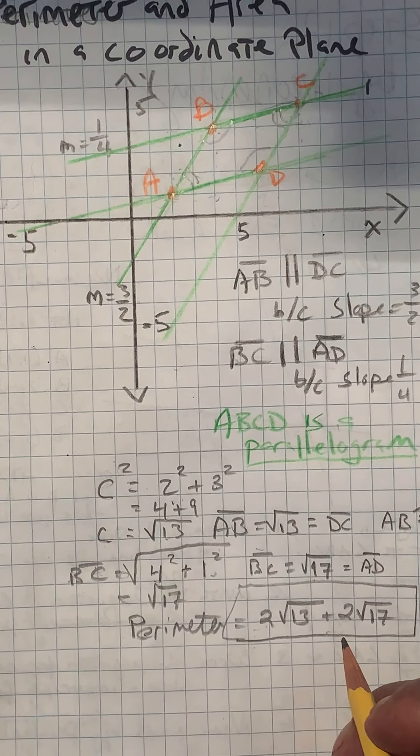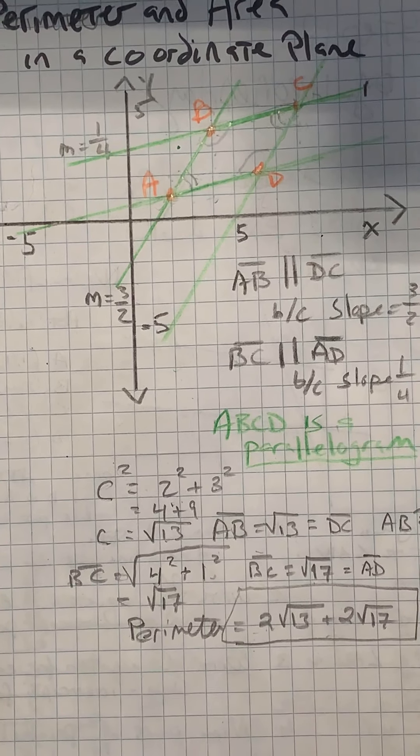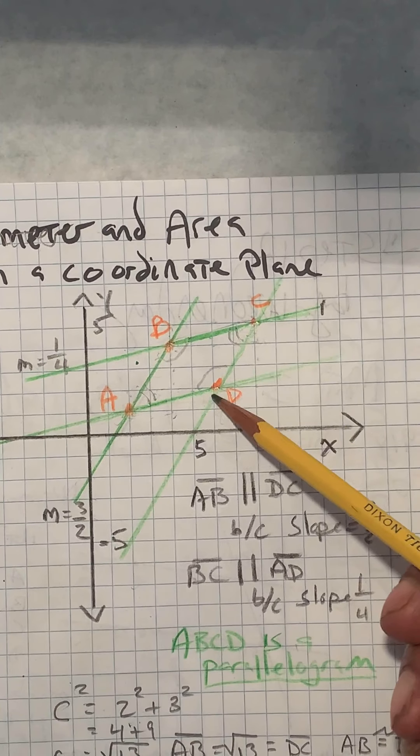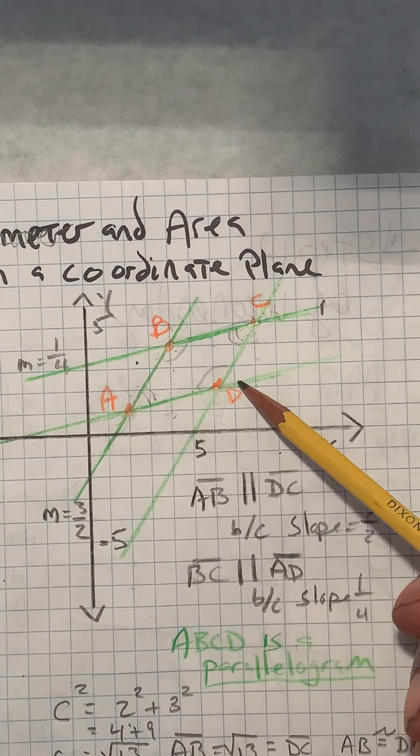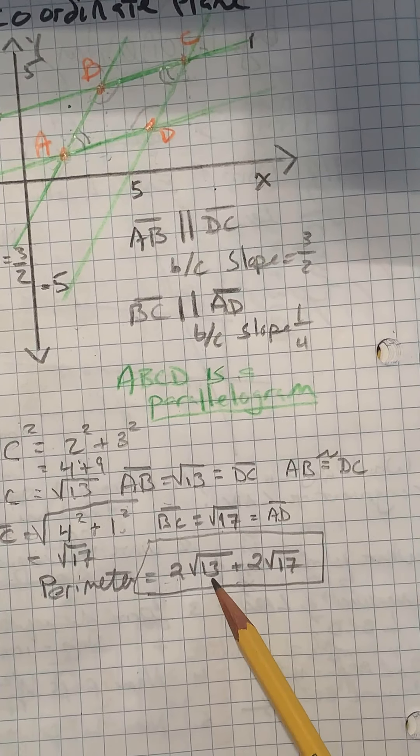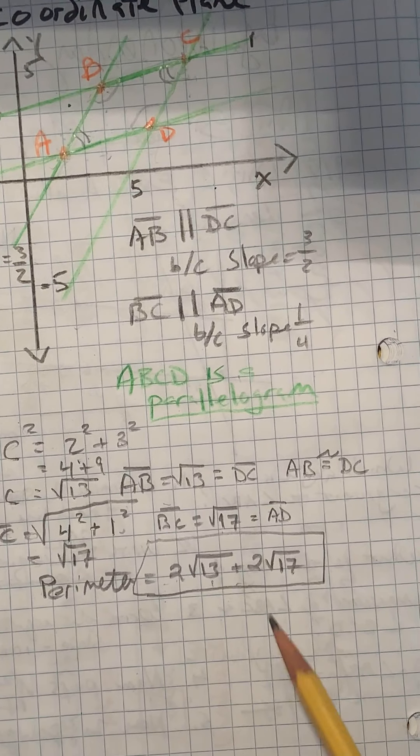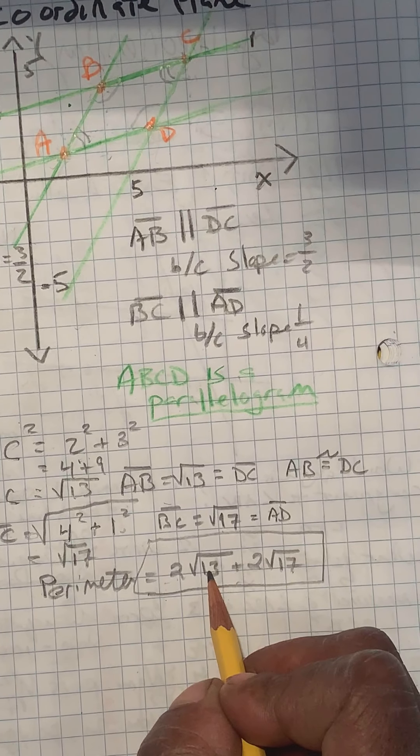If you then needed to do this as a real-life problem, say this was a map of a garden space, and you really actually had to buy fencing to go around this space, you'd have to then plug this into your calculator to get the approximation. Square root of 13 is less than 4, because square root of 16 is 4.